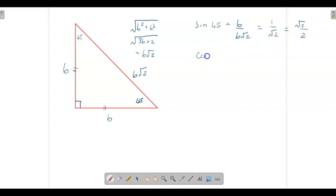Well cosine, guess what, it's exactly the same because cosine 45 is not using the opposite, it's using the adjacent. But we have the six over root two, so this is also root two over two.